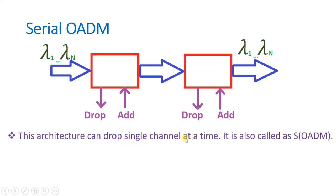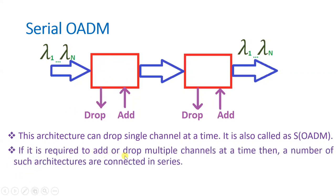This architecture can drop a single channel at a time and is also referred to as SOADM. If it is required to add and drop multiple channels at a time, more architectures are connected in series. So if you want to increase capability you should connect more elements in series to add and drop more channels in the network. Serial OADM is useful when there is a flexible need — you don't need extra cabling and based on requirement you can connect more OADM modules in series.